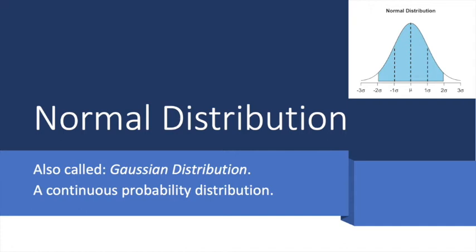The normal distribution is also called Gaussian distribution, and it is a continuous probability distribution.